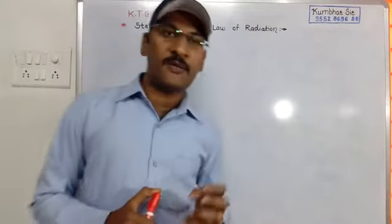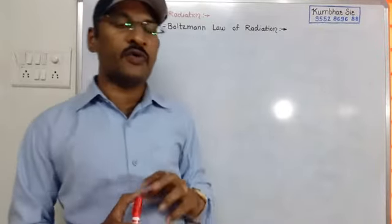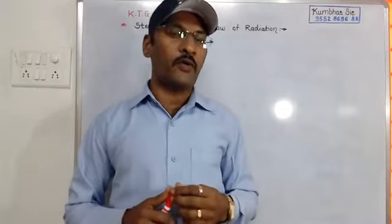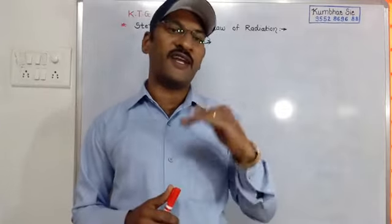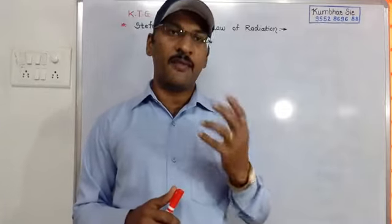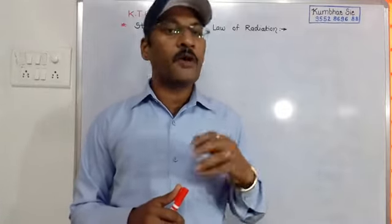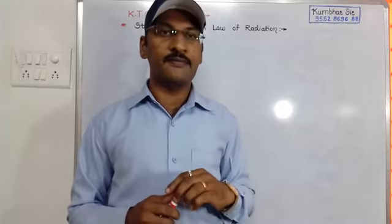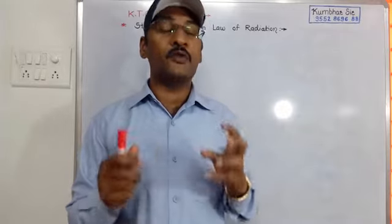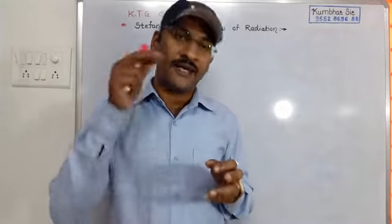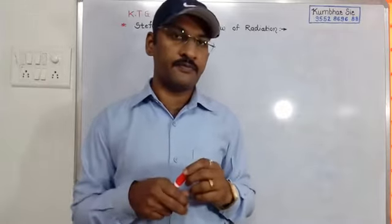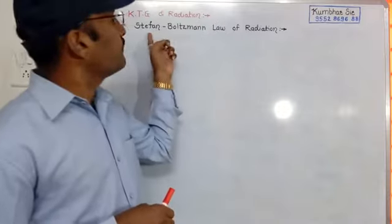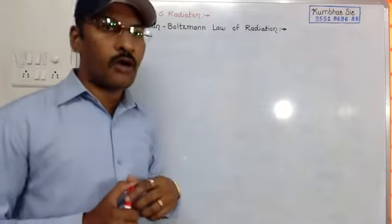Stefan is the name of the scientist who developed the relation between emissive power — the amount of heat radiated by a body per unit area per unit time — and the absolute temperature of that body. Hence this law is called Stefan's Law.